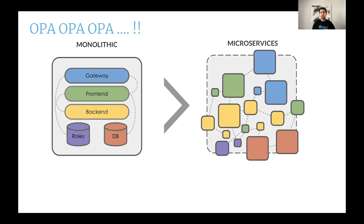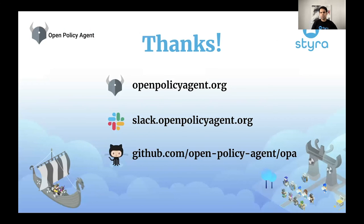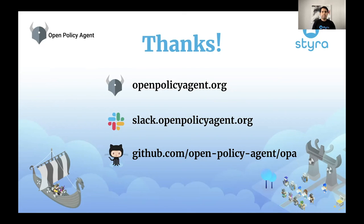When you think about authorizing your microservices in a highly performant manner, I hope you'll think about the Open Policy Agent. You can learn more about OPA at openpolicyagent.org, join the Slack community if you have questions or use cases to discuss, and check out the project on GitHub. Please do star the project if you like what you see. Thank you for joining us and sharing your time today.